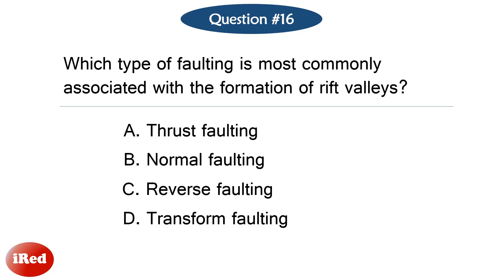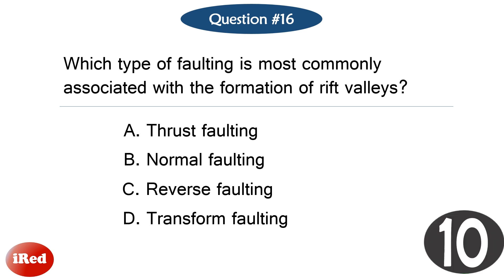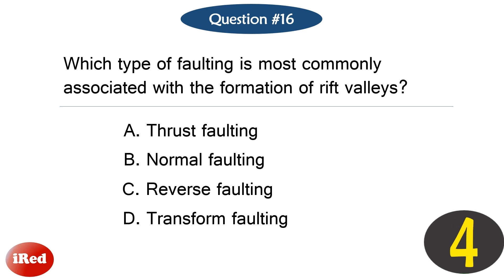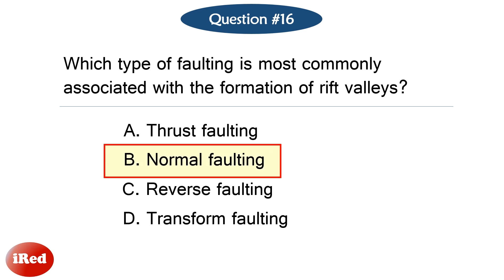Question number 16. Which type of faulting is most commonly associated with the formation of rift valleys? The correct answer is letter B: normal faulting.